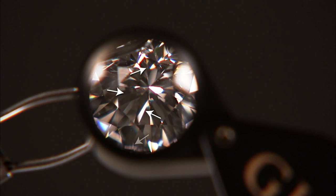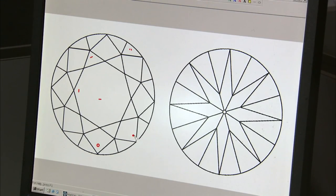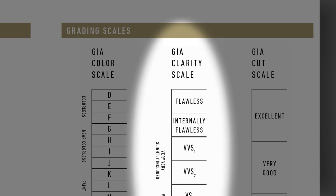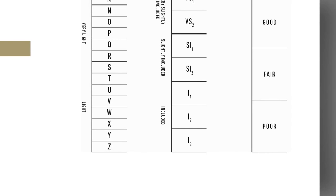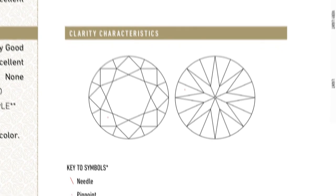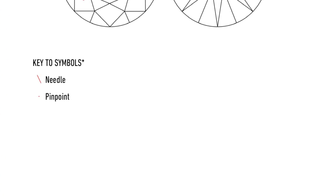Diamond clarity evaluates the number, size, relief, nature, and position of internal inclusions and surface blemishes. GIA assigns one of eleven clarity grades, ranging from flawless to included, and lists the most prominent clarity characteristics. On some report formats, clarity characteristics are shown as a plotted diagram, marking significant or identifying characteristics. A key lists the relevant symbols and their definitions.